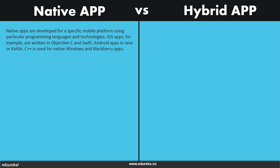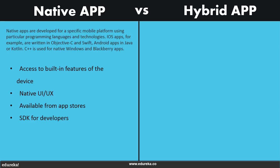Native applications are considered to be the most reliable, showing extraordinary performance when compared to hybrid or web applications. Native applications are developed for a specific mobile platform using particular programming languages and technologies. iOS apps, for example, are written in Objective-C and Swift, and Android apps are written in Java or Kotlin. C++ is used for native Windows and BlackBerry apps, and native app development is preferred for high performance apps. The advantages of having a native application include access to built-in features of the device, a native UI and UX, direct availability from app stores, and a specified software development kit for development purposes.